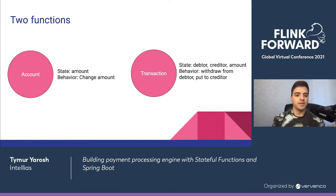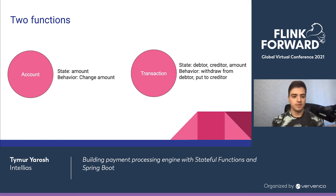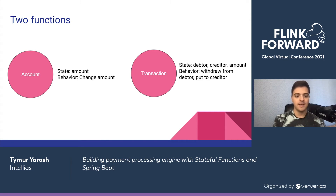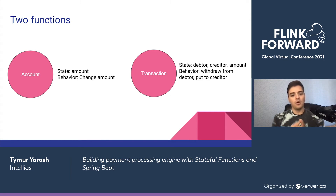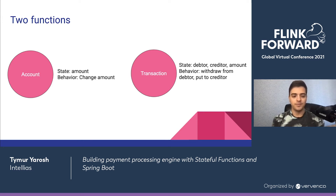Let's review our operation: withdraw money from the debtor account and put money to the creditor one. We need an account function that carries its balance and can change it. Also, we need a transaction function that carries transaction properties such as debtor, creditor, and amount, and asks the account function to withdraw or put some money.